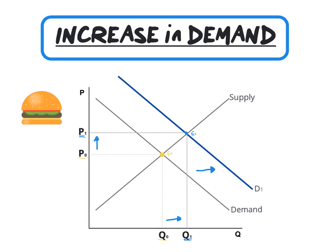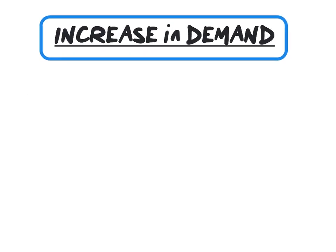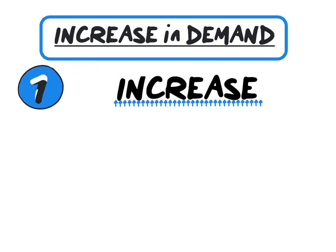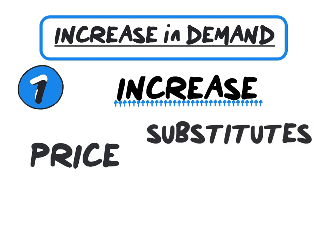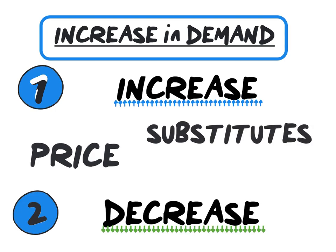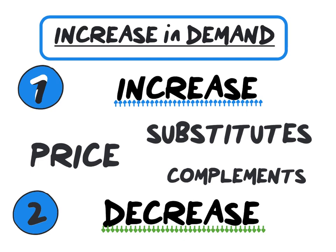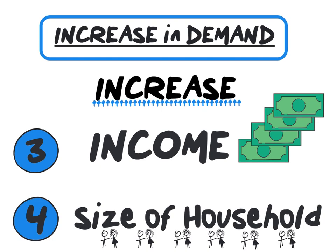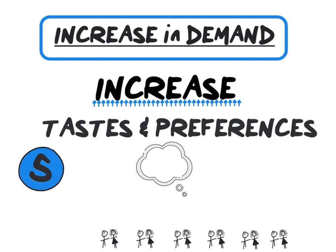As a result of the increase in demand, the price increases from P0 to P1 and the quantity of burgers increases from Q0 to Q1. To summarize: an increase in demand is caused by an increase in the price of a substitute, a decrease in the price of a complement good, an increase in income, an increase in household size, and an improvement in taste or preferences for burgers.